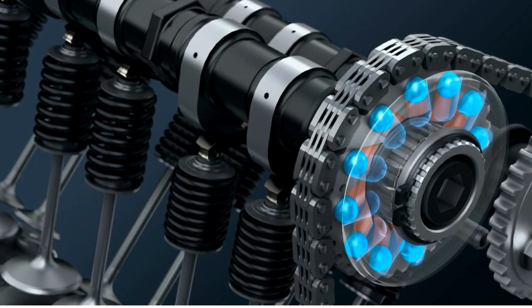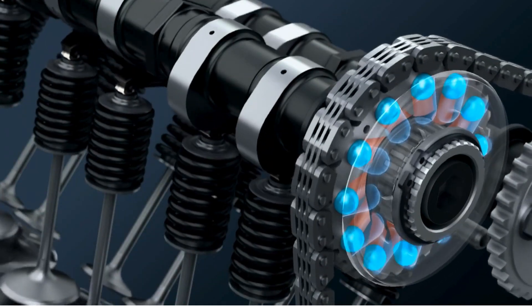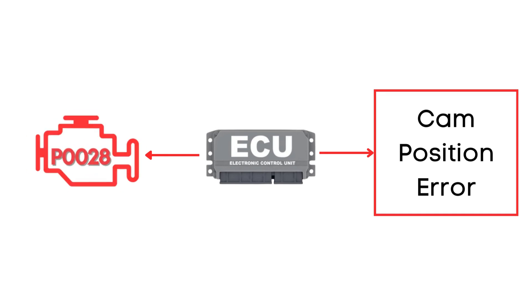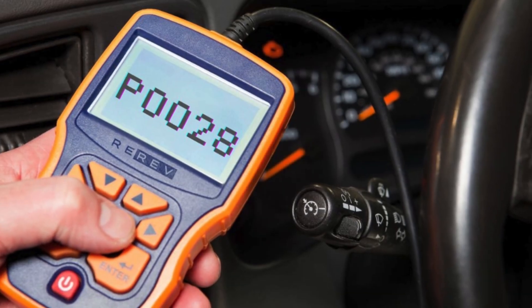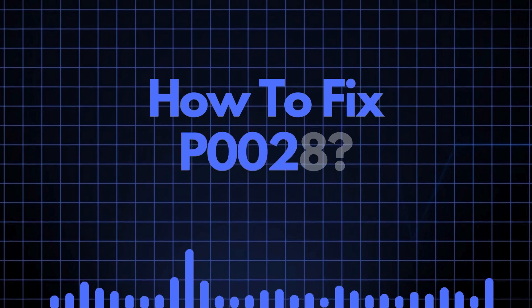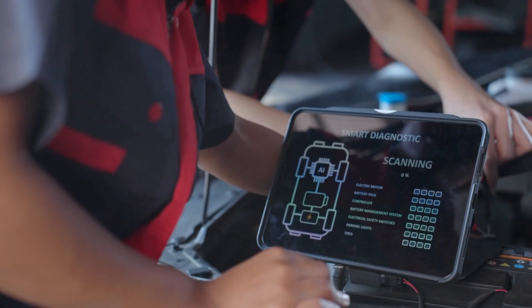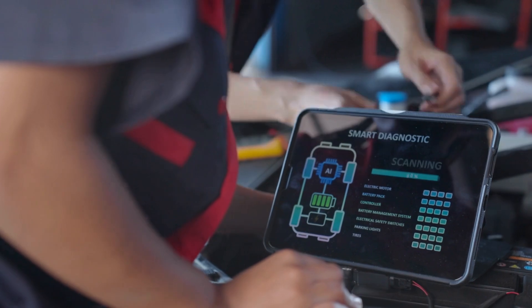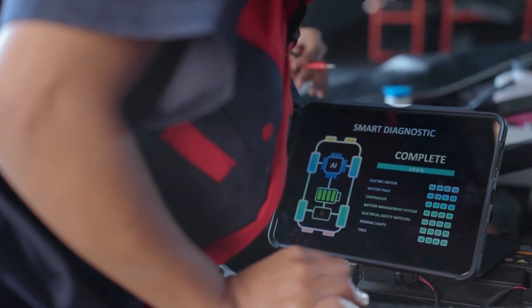If the ECU detects that the camshaft's advance or delay is taking too long, or if it simply can't reach the desired camshaft position, that's when the P0028 code gets triggered. Now that we know what P0028 means, let's find out how to fix it. Troubleshooting P0028 involves several steps, and we'll discuss each one in detail.